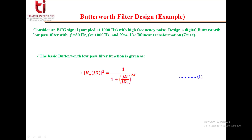The Butterworth analog filter is H_A(jω), where ω represents the analog frequency. The magnitude squared is equal to 1 divided by 1 plus (jω / jω_c)^(2n), where ω_c is the cutoff frequency in radians and n is the order of the filter.